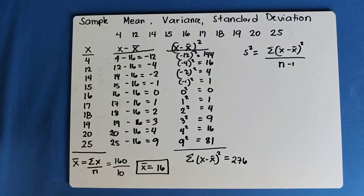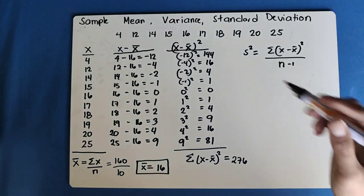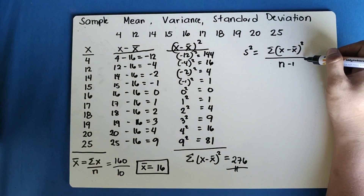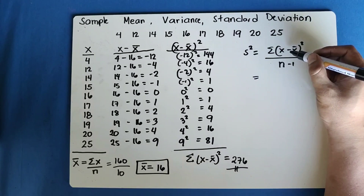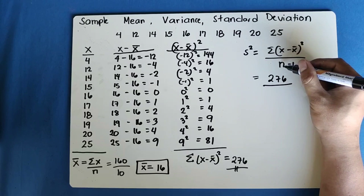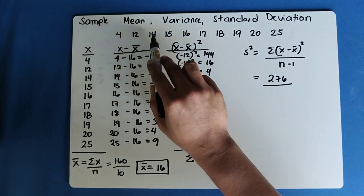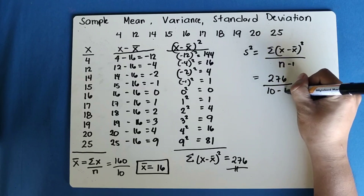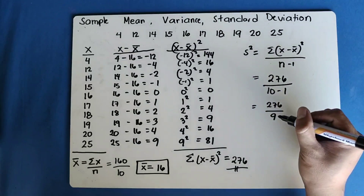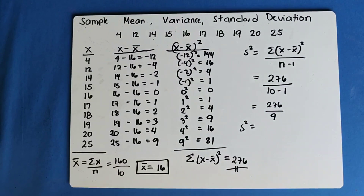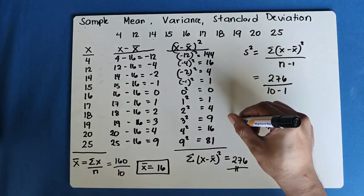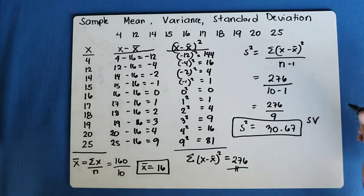We obtained the summation of (x minus mean) squared so that we can directly substitute the result into the equation. Our summation result is 276, and our n is 10 since we have 10 data. So: 276 divided by (10 minus 1), which is 276 divided by 9. The result is 30.67. So this is our sample variance.